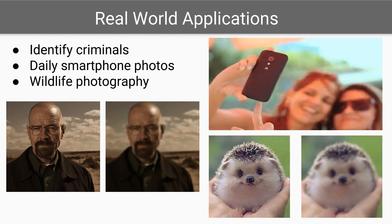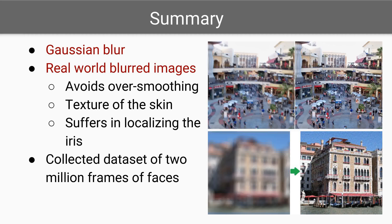Although this paper focused on an algorithm to de-blur human faces in particular, such methods could also be explored for wildlife and nature photography, albeit with different domain-specific features. Based on the results, for Gaussian blur the proposed method works well, and for motion blur the result shows similar performance compared to other contemporary methods. For real-world blurred images, the result shows that the proposed method avoids over-smoothing and de-blurs the texture in a decent way, but it suffers in localizing specific features like the iris of the eye.